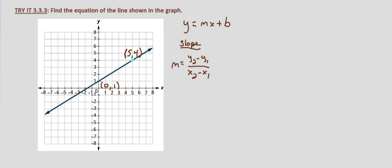Go over from 0, 1 to 5 and up to 4. But I'm going to use the slope formula since we have our two points.